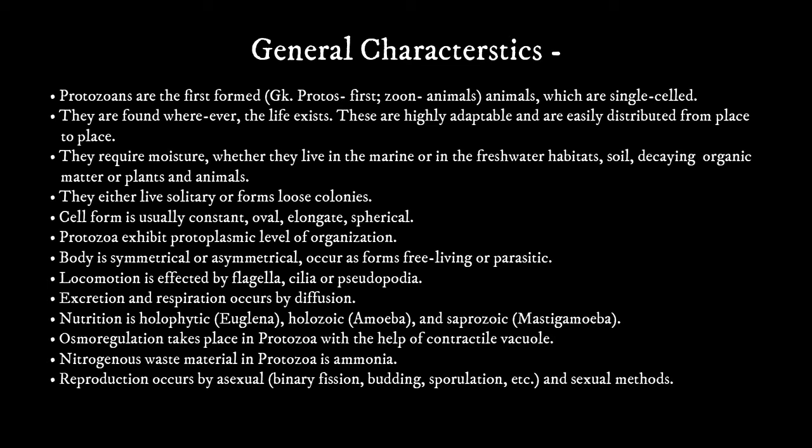The third general characteristic is that protozoans tend to live on organic matter and may form loose colonies. They either prefer solitude — meaning living alone — or form small, loose colonies. The cell form is usually constant, whether oval, elongated, or spherical. Protozoans exhibit a protoplasmic level of organization.